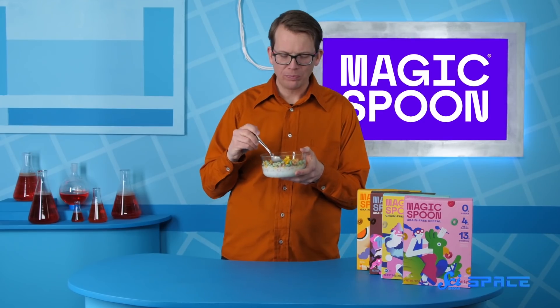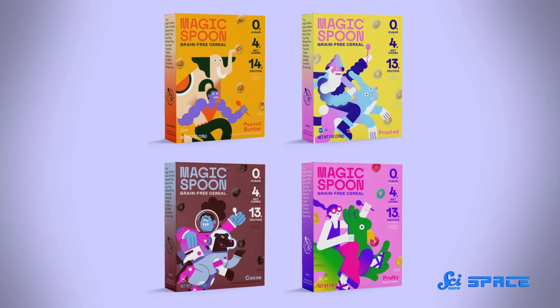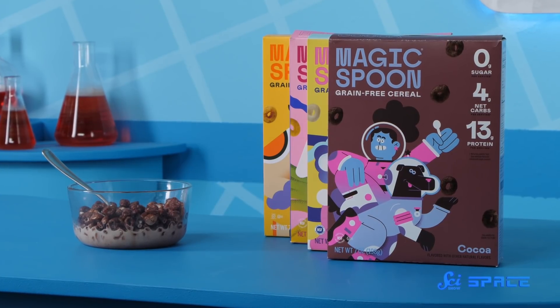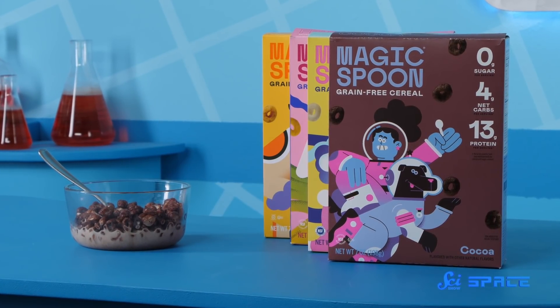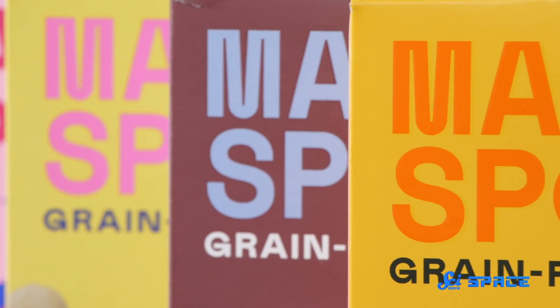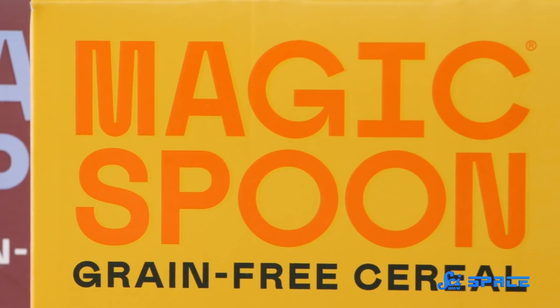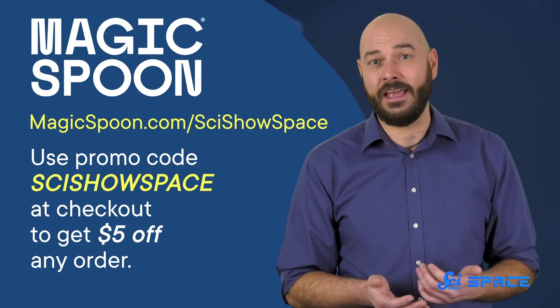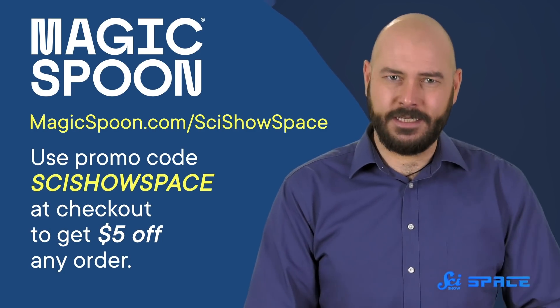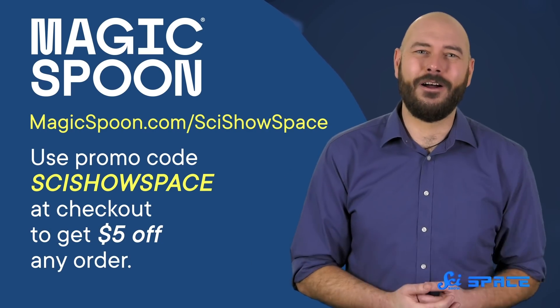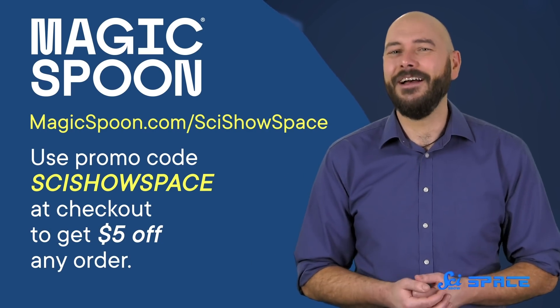But something that can be testable in this lifetime is cereal. And today's sponsor, Magic Spoon, has some great flavors that can bring you right back to your childhood. Like cocoa, fruity, frosted, and peanut butter. Plus, it's a great way to keep some of those New Year's resolutions. Magic Spoon has zero grams of sugar, 14 grams of protein, and only four net grams of carbs in each serving. It's also only 140 calories. And if you can't decide on a single flavor, you can snag their variety pack by going to magicspoon.com slash scishowspace. You can use the promo code scishowspace at checkout to get $5 off any order. Plus, all orders come with a 100% happiness guarantee, so if you don't like it for any reason, they'll refund your order, no questions asked. Thanks so much for watching, and thanks again to Magic Spoon for sponsoring this episode of SciShow Space.